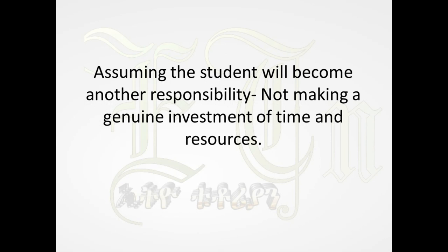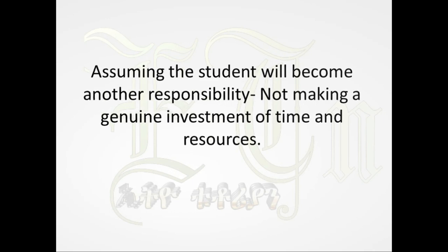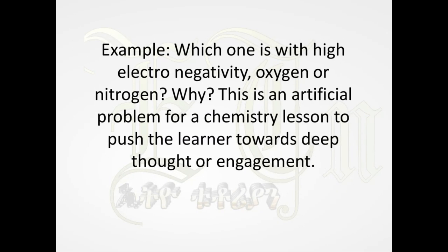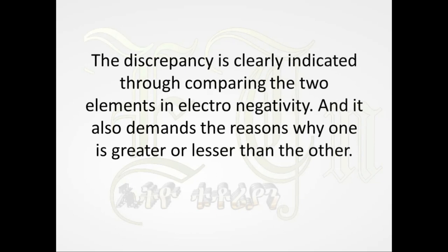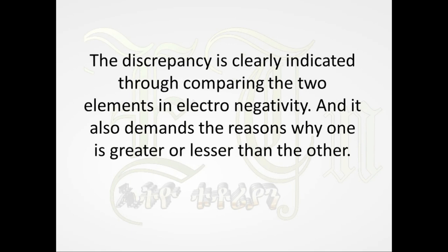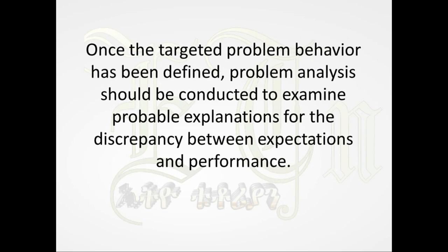Avoid assuming the student will become another's responsibility without making a genuine investment of time and resources. Course 2 — why is this problem considered a problem? Activity 4.5: justify how the problems designed in the lesson are taken as problems. Example: which one has higher electronegativity — oxygen or nitrogen? Why? This is an artificial problem for a chemistry lesson, designed to push the learner towards deep thought and engagement. The discrepancy is clearly indicated by comparing the two elements in electronegativity, and it demands reasons why one is greater or lesser than the other.